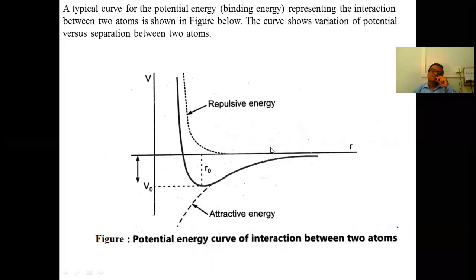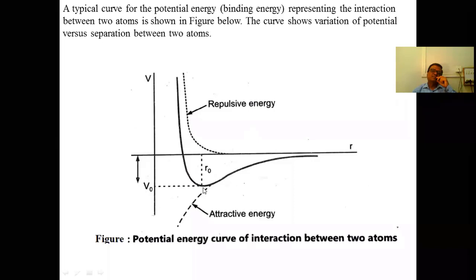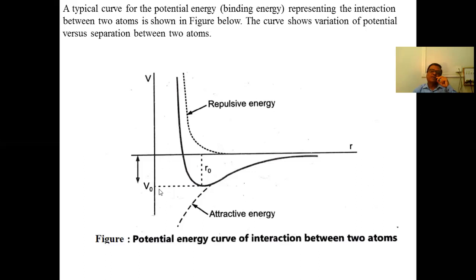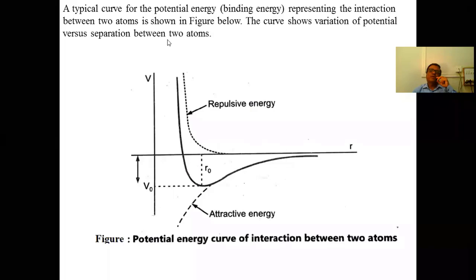At distance R₀ there is stability — no attractive force and no repulsive force. This is the natural or equilibrium separation distance. The structure behaves like a spring: when the distance is reduced below R₀ there is repulsion, and when increased there is attraction. At R = R₀ the potential energy is minimum, that is called V₀. A typical curve for potential energy representing the interaction between two atoms shows the variation of potential versus separation.